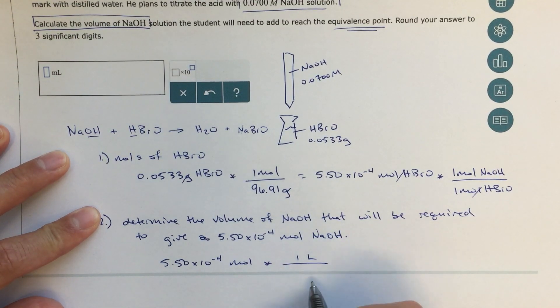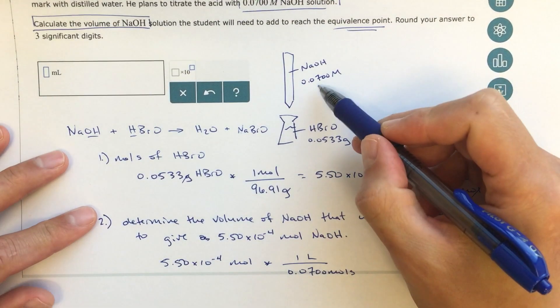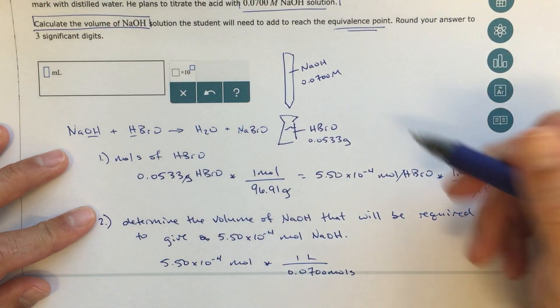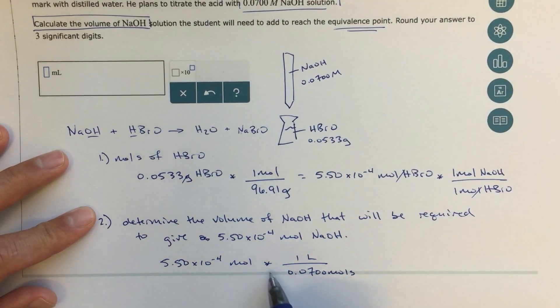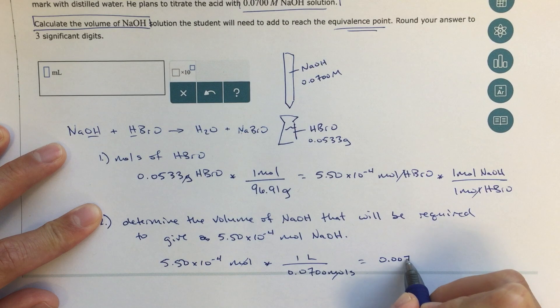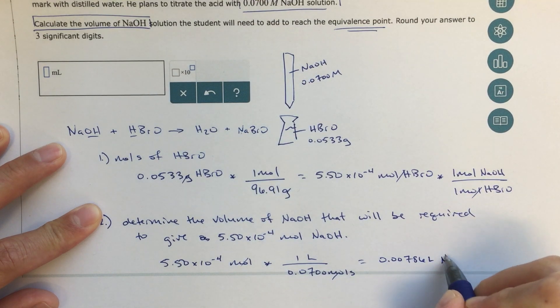So the way I would set this up is I would say one liter is to 0.0700 moles. So this means that's the number of moles per every liter—molarity is moles per liter, and I'm going to do a conversion factor here. I'm going to say this is the number of moles I want, I can cancel out the moles, and this calculation will give me 0.00786 liters of my sodium hydroxide solution.